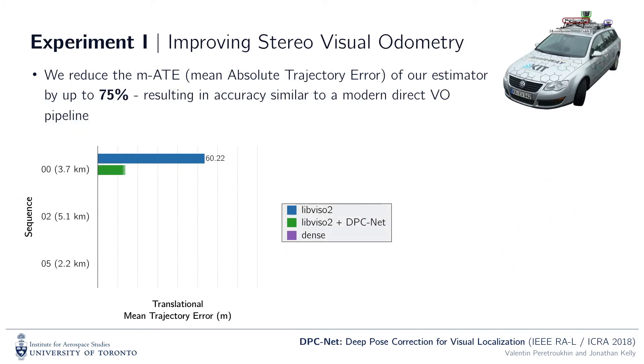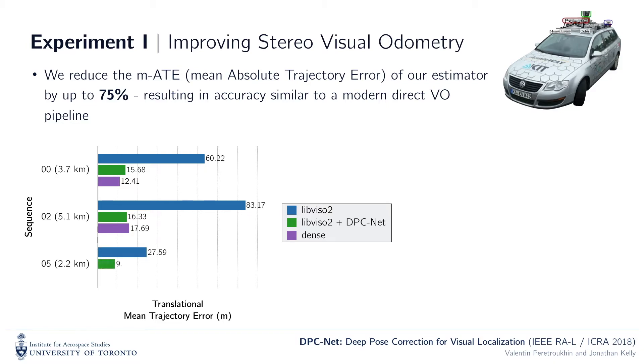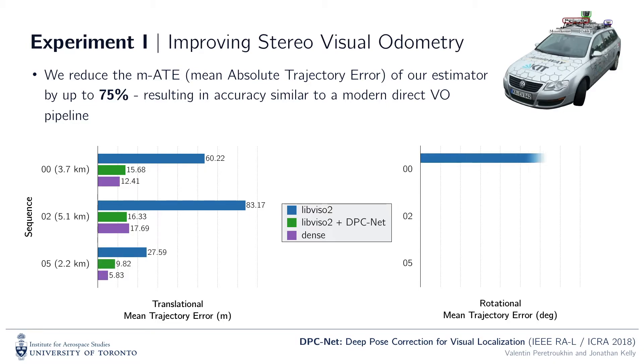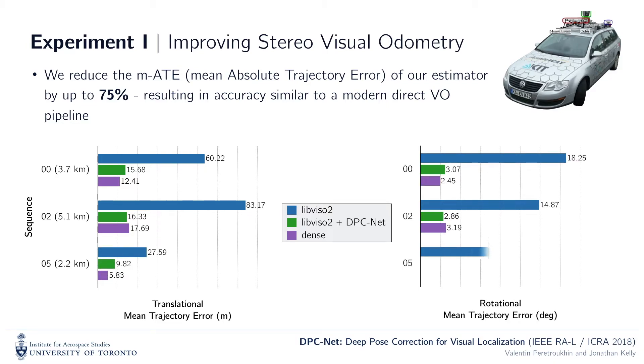DPCnet is able to reduce the pose error of our efficient estimator by as much as 75% and render it as accurate as the modern, dense, keyframe-based approach.